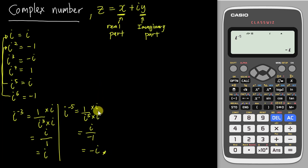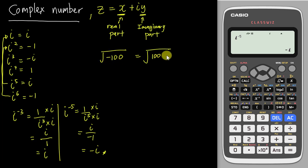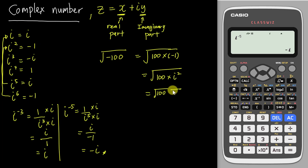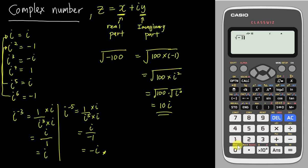Now back to the earlier question: square root of negative 100. Since negative one equals i squared, we can write this as the square root of 100 times i squared. Taking the square root of 100 gives 10, and the square root of i squared gives i. This is why the square root of negative 100 gives 10i.